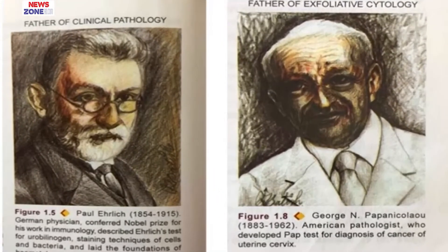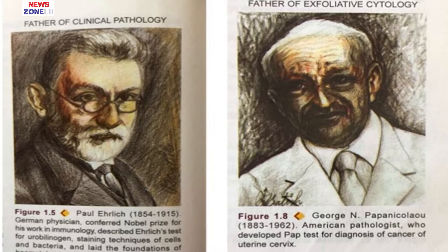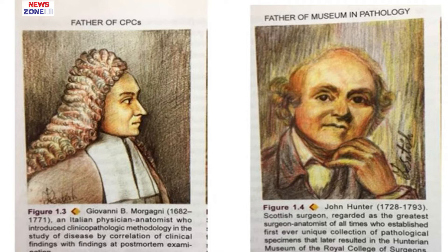Let us salute the noblemen who are the pioneers of various fields of pathology. Their dedication and discoveries are still helping us tremendously to diagnose disease and manage patients appropriately. Paul Ehrlich, a great physician who developed techniques of staining cells and bacteria, laid the foundations of hematology and clinical pathology, and is considered the father of clinical pathology. George N. Papanicolaou, an American pathologist, developed the Pap test for diagnosis of cancer of the uterine cervix, still used worldwide for cervical cancer screening. Giovanni B. Morgagni developed methodology in the study of disease by correlating clinical findings with post-mortem findings. John Hunter, the father of the museum in pathology, established the first pathological museum.